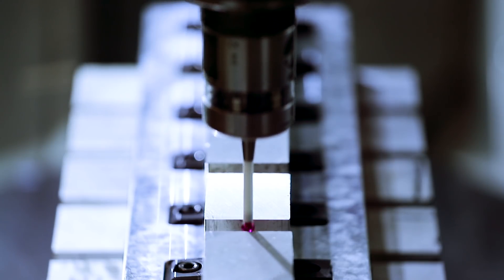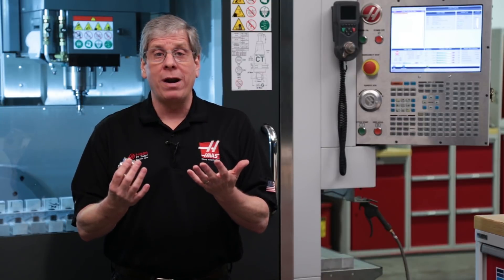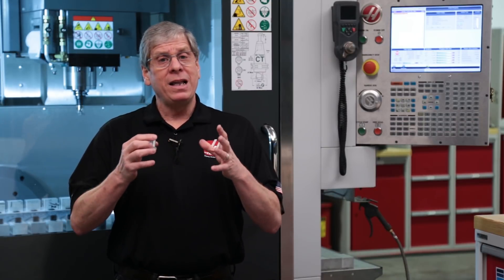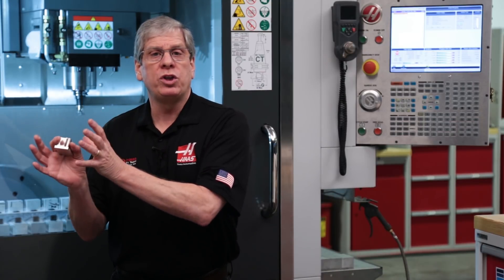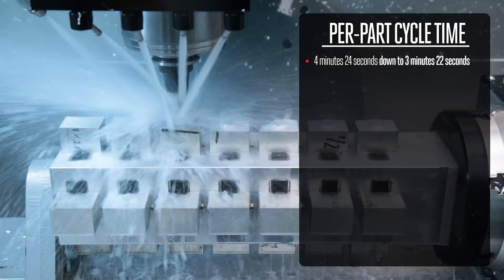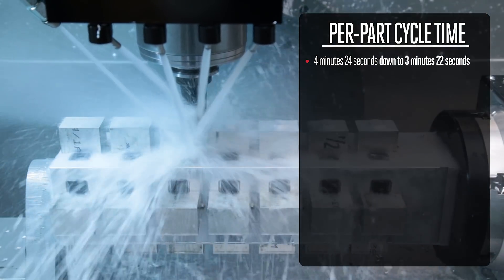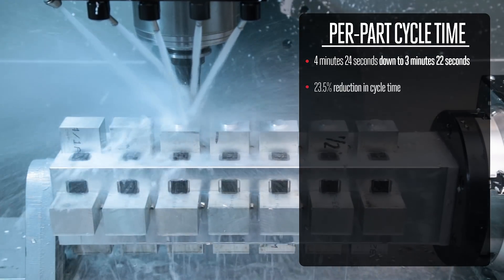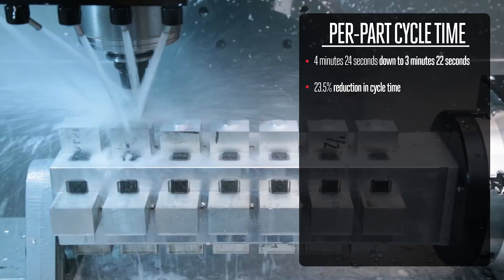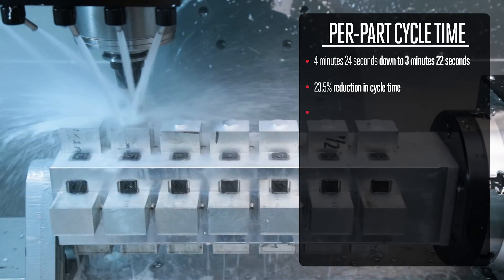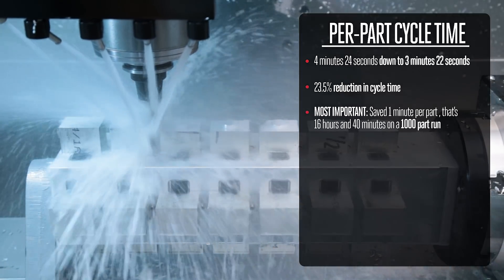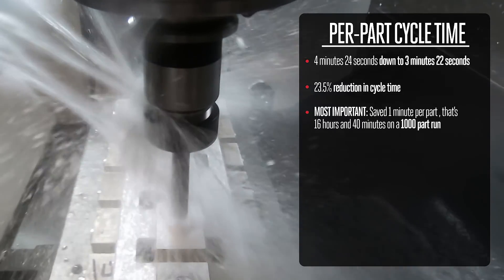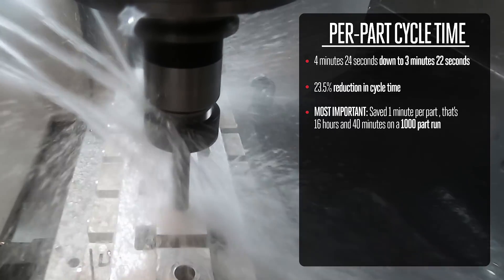Once I've set all the work offsets, it's time to run the program through. Because I eliminated all those repeated tool changes, my per part cycle time went from 4 minutes 24 seconds down to 3 minutes 22 seconds. That's a 23.5% reduction in cycle time, but more importantly, I save over one minute for every part I run. That's 16 hours and 40 minutes on a 1,000 part run.